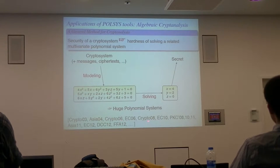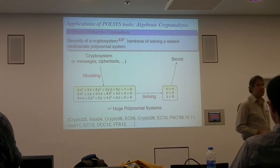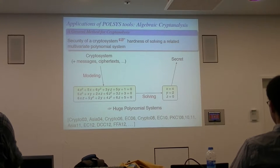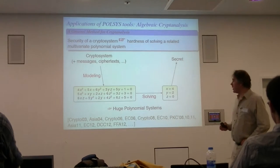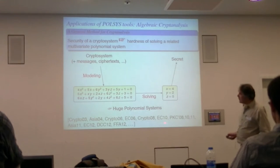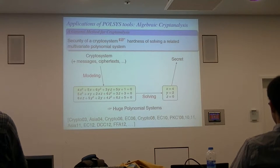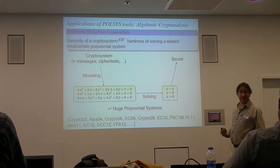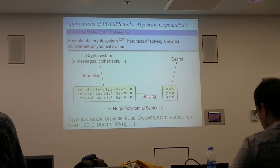It is a way to generate a huge amount of polynomial systems, and most of the time these systems are quite large — the number of variables in systems coming from cryptographic applications can be 100 variables, 10,000 variables, and more. But we were able to apply this technique to break or eliminate the security of existing cryptosystems, and we were able to publish these results.